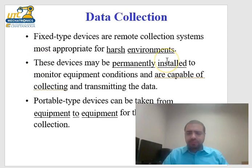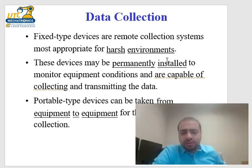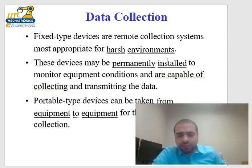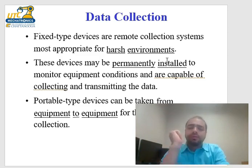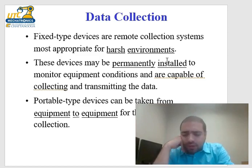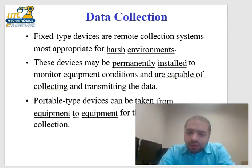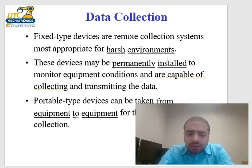For data collection, there are two types of devices: fixed and portable. Fixed-type devices are remote collection systems installed in harsh environments — for instance, some truck engines have a wireless transmitter that transmits data. Portable devices can be moved from equipment to equipment as needed.